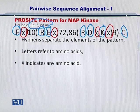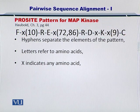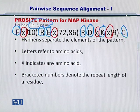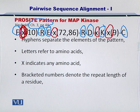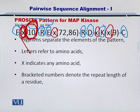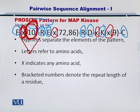I've circled all X's for you. The bracketed numbers denote the repeat length of a residue. For instance, here you have an X — meaning any amino acid — and it should be repeated 10 times. So there are 10 amino acids between F and R. In this way, you can fill up the area between these two amino acids.